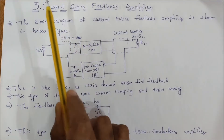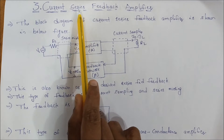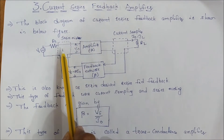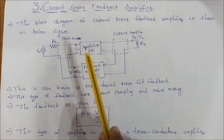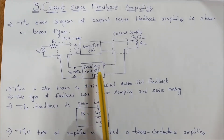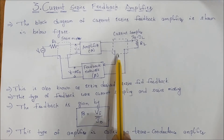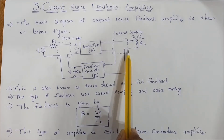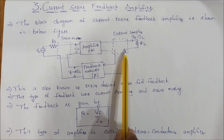I will explain the current sampling side, series and mixing network. Mixing network is the input side and sampling network is the output side. Current sampling is the input side of the feedback network and amplifier output connected to the series.